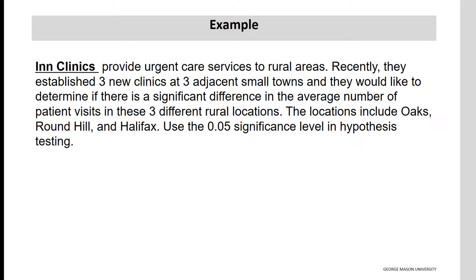In-clinics provide urgent care services to rural areas. Recently, they established three new clinics at three adjacent small towns and would like to determine if there is a significant difference in the average number of patient visits in these three different rural locations. The locations include Oaks, Round Hill, and Halifax. Use the 0.05 significance level in hypothesis testing.